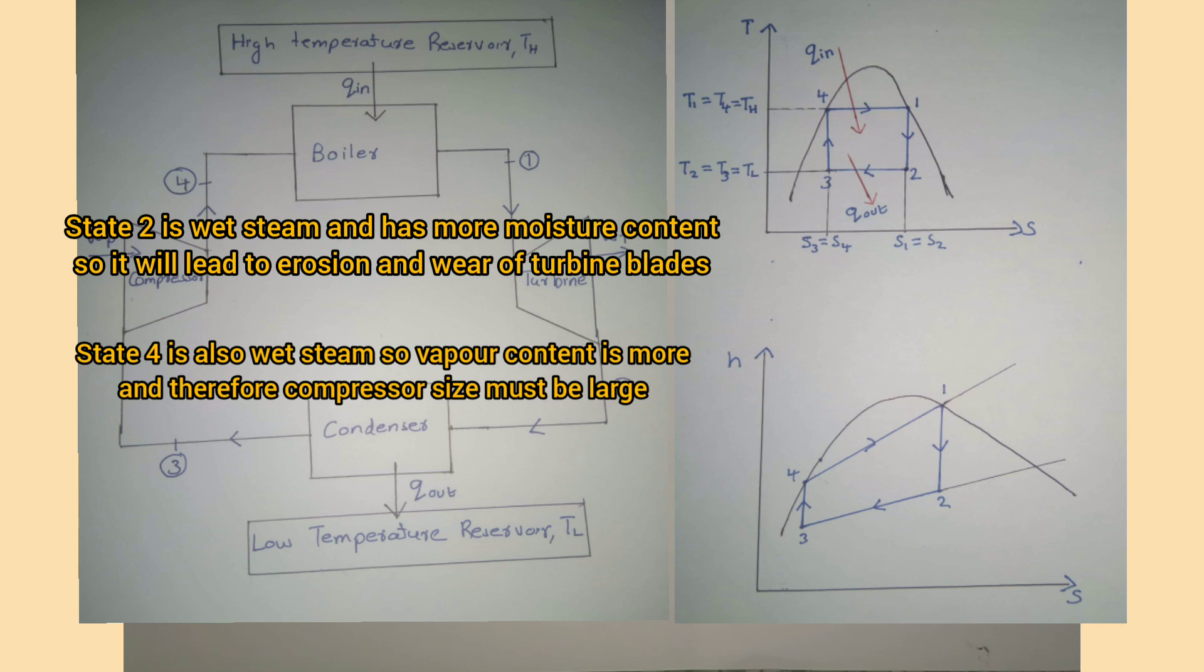State 4 is wet steam, that is a mixture of liquid and vapor. Since vapor content is there, the compressor size and working input must be large. These practical difficulties limit the use of Carnot cycle for steam power plants.